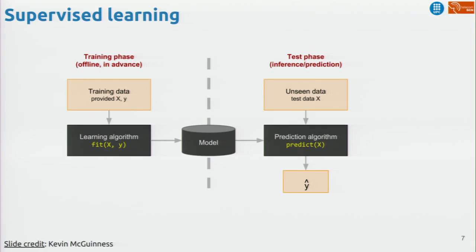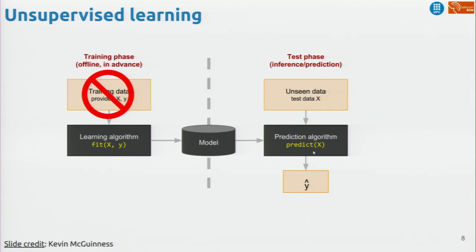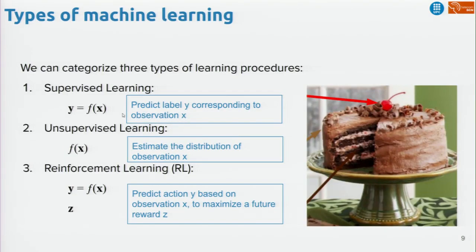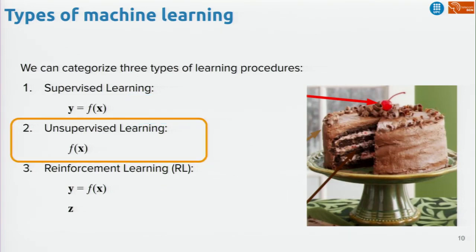To recap classic supervised learning: we have training data with pairs of data and labels. We learn some function f, we have the model, and when we have new test data, we want to predict the labels. In the case of unsupervised learning, we don't have these pairs of x and y, so we need to figure out how to learn something without having pairs of x and y.